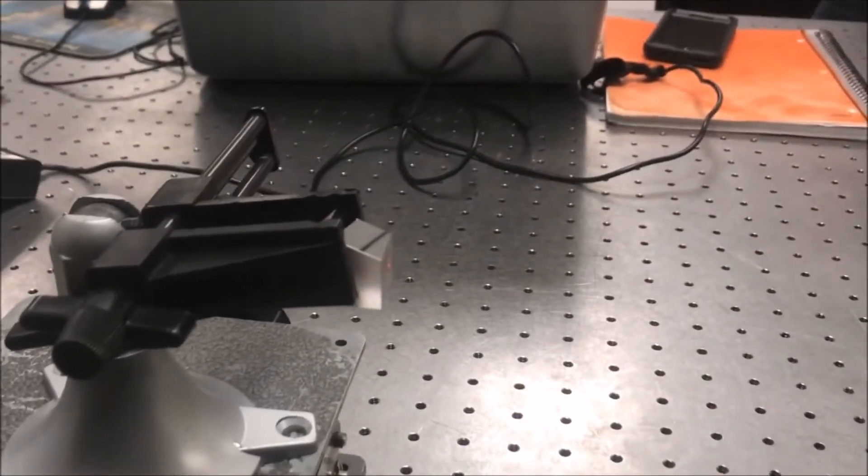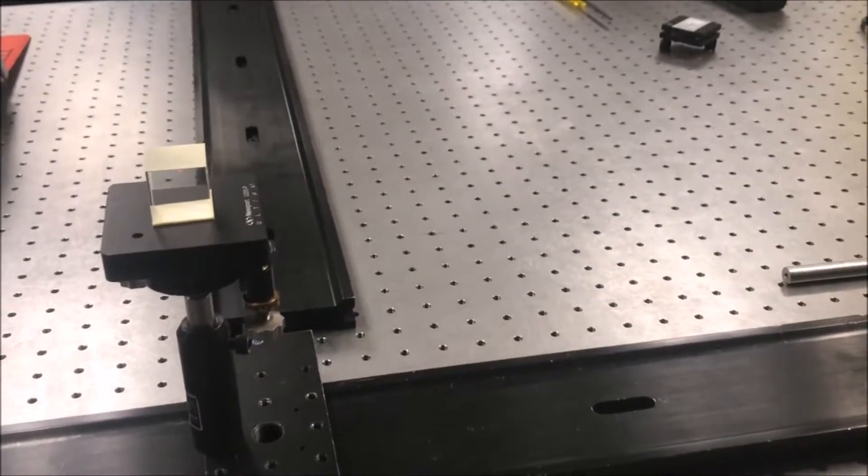We can then check to see how deviated this is by looking to see how the return path is on the iris. Not being shown here is our setup that we had with the water.